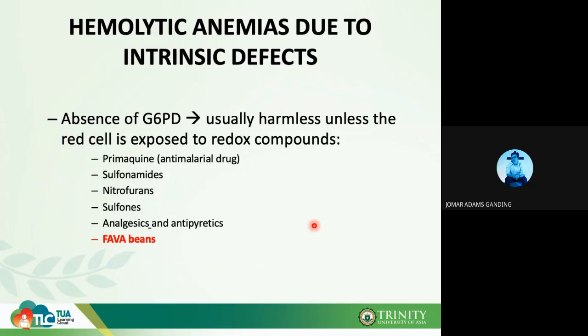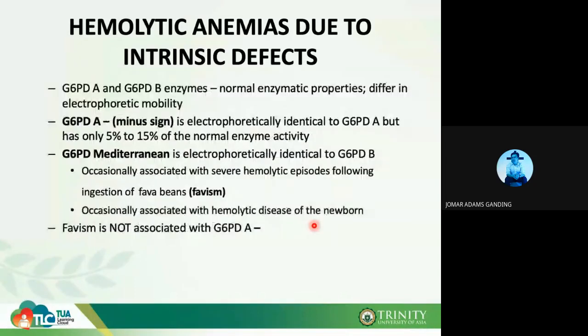Due to G6PD deficiency, there is usually no problem unless you are exposed to reducing and oxidizing compounds such as primaquine, sulfonamides, nitrofurans, sulfones, analgesics, antipyretics, and fava beans. Exposure to these compounds causes your hemoglobin to be oxidized and denature, forming Heinz bodies — because you lack glucose-6-phosphate dehydrogenase to prevent oxidation.